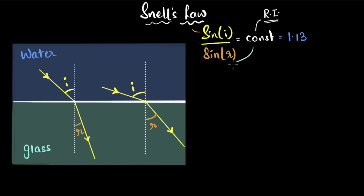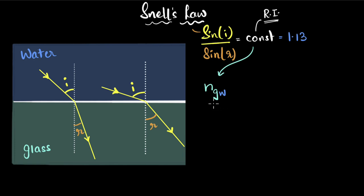The symbol we use for refractive index is N. Since refraction is happening in glass, we use the subscript G — N_G. But since the light came from water, we say this is the refractive index of glass with respect to water. That is how you read it: refractive index of glass with respect to water, which is 1.13.